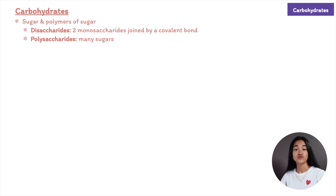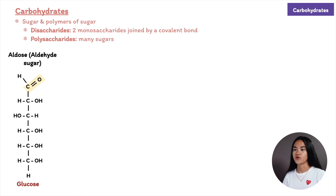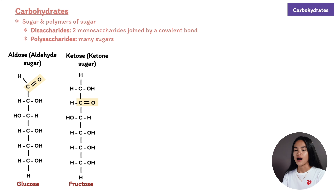The most common monosaccharide is glucose. Monosaccharides have a carbonyl group and multiple hydroxyl groups. Depending on where the carbonyl group is, a monosaccharide is either an aldose — an aldehyde sugar — or a ketose — a ketone sugar. Aldoses have their carbonyl group at the end of the carbon skeleton, and ketoses have their carbonyl group within the carbon skeleton.